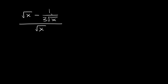So we have the square root of x minus 1 over 3 times the square root of x, all over the square root of x. The first thing you always want to do is find the lowest common denominator of all your terms. Here you can see we basically have three terms: this square root of x, this little fraction 1 over 3 times the square root of x, and down here also just a square root of x.